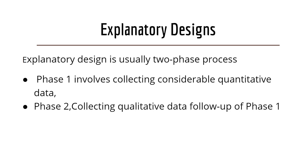Explanatory Design is usually a two-phase process. In this case, the quantitative phase comes first. Phase 1 involves collecting considerable quantitative data — perhaps in an experiment, an exposed-factor study, or a survey. However, this phase yields only numbers, for example percentages or averages.